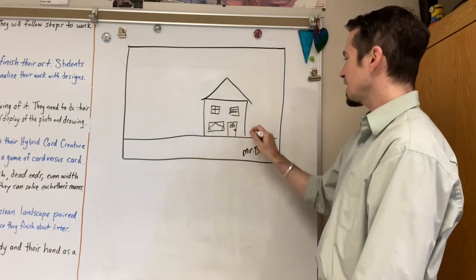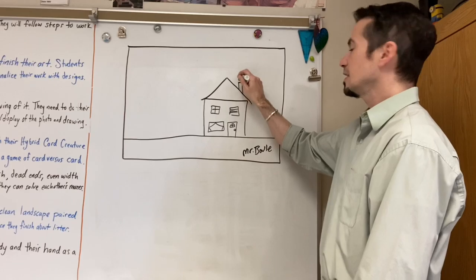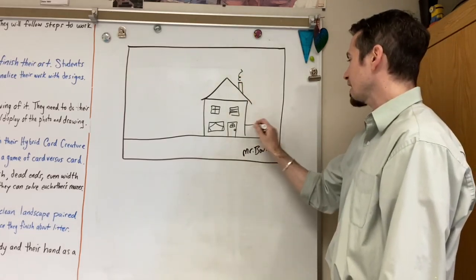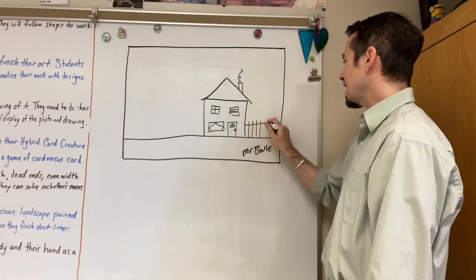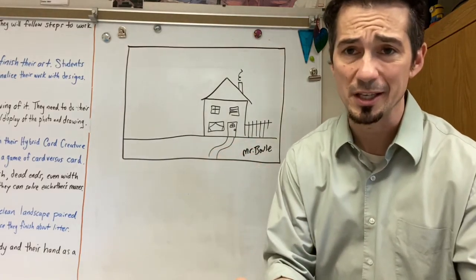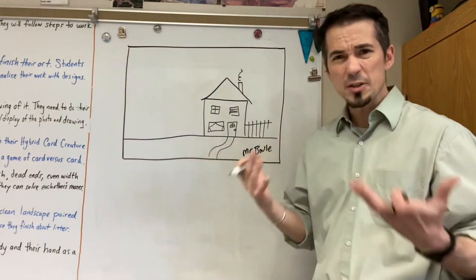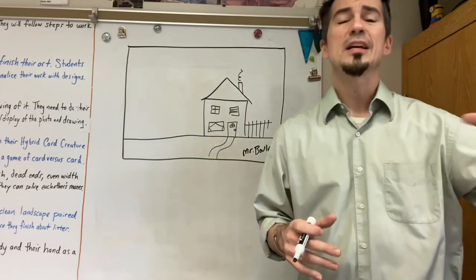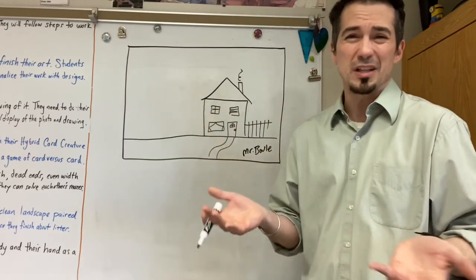You could put extra details. Maybe you want a chimney coming out the top. Maybe you want a fence out the side. Maybe you want a pathway leading up to your house. That's completely up to you. Also, set up a tree. Trees are in nature. It's kind of against like littering. You don't want to litter in nature.